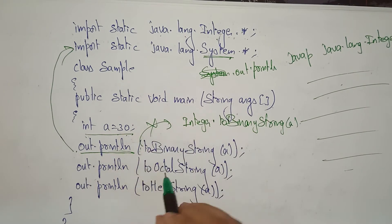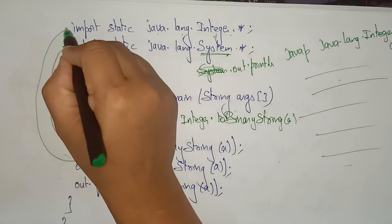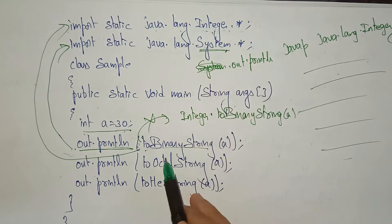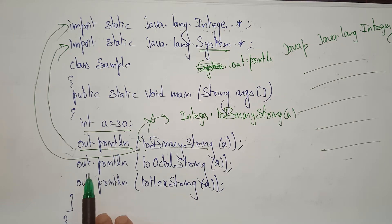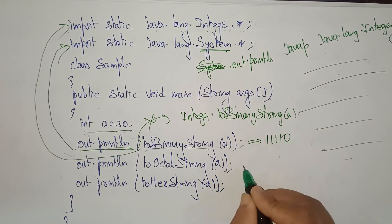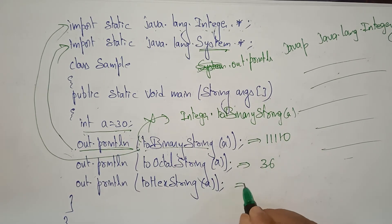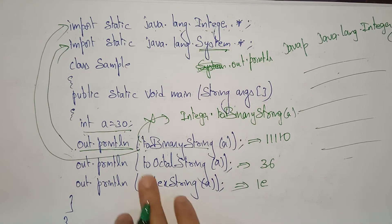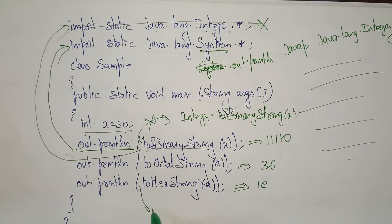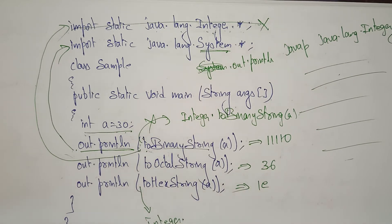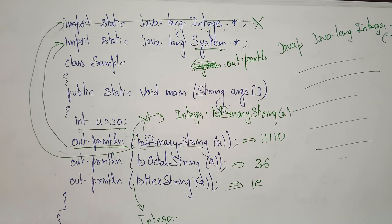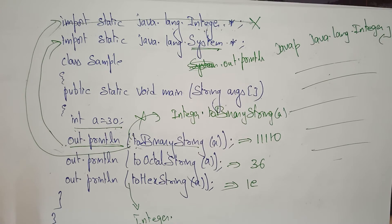Because Integer is already imported, there is no need to mention the class name — you can directly call the method. So out.println toBinaryString, out.println toOctalString, out.println toHexString. Whatever value 30 is there, it converts to binary, octal, and hexadecimal. If you hadn't written the import statement, you would have to write Integer dot each time. This is the use of static imports.